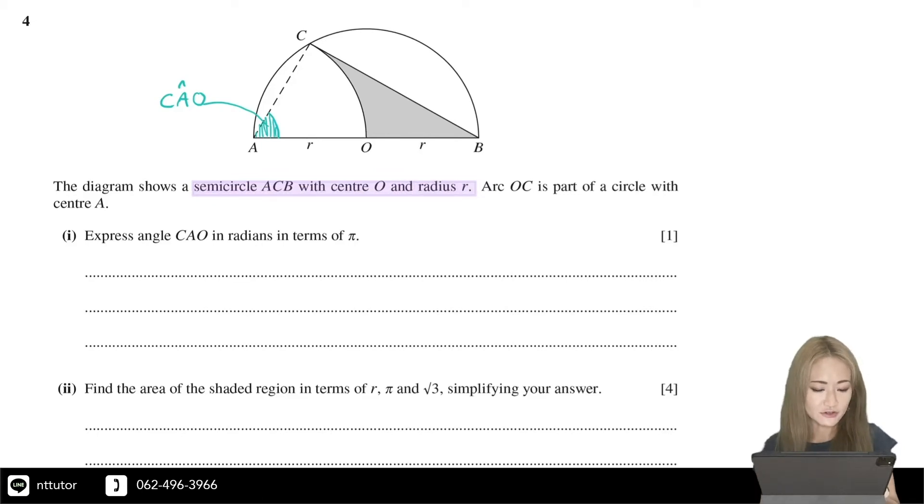We are given that it's a semicircle and the center is at O with radius R. So if the center is at O, then OC must also be the radius as well. So we know for sure that OC must be R as well.